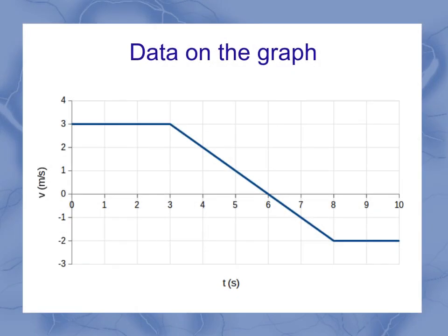Now if I have data points, I can create a graph. Or if I've got a graph, I can extract data from that graph. For example, on this graph, if I wanted to know the velocity at 4 seconds, I can see that that is 2 meters per second, a positive 2 meters per second. Or at 9 seconds, I've got a minus 2 meters per second.